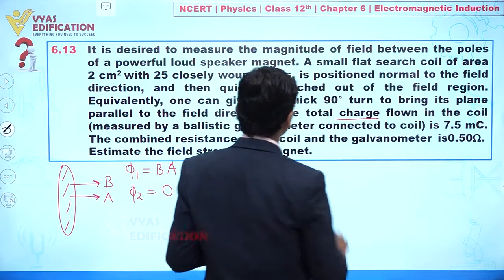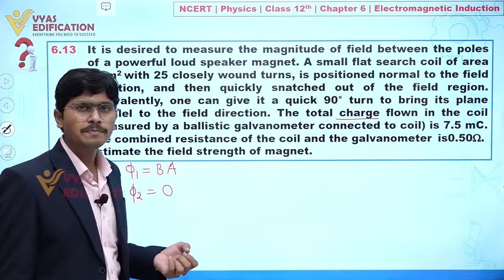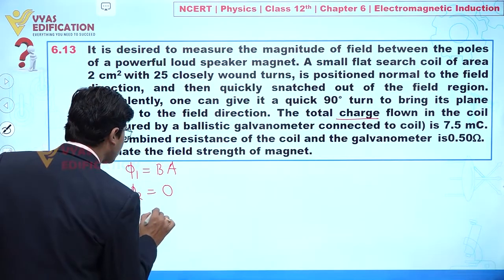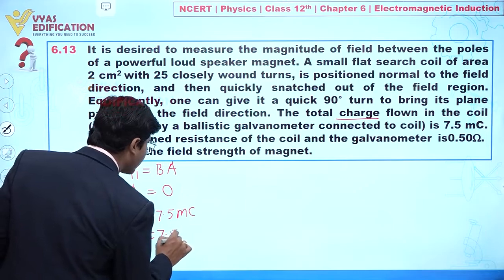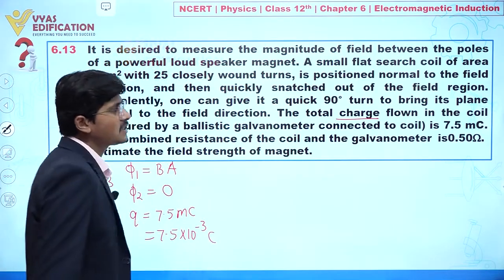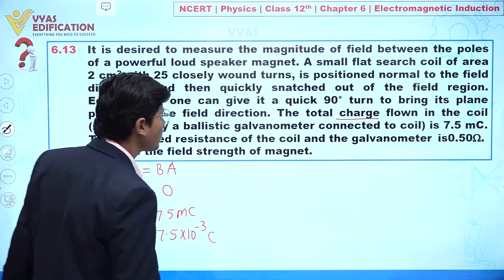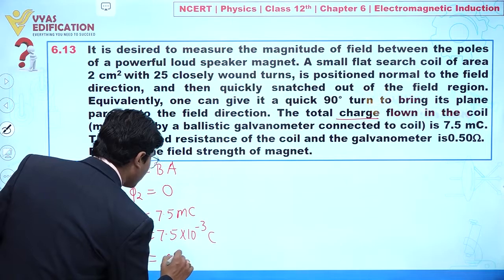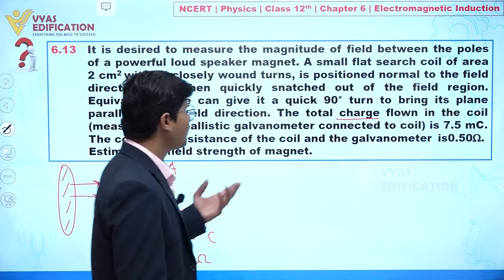One more thing is given: the total charge flown in the coil is 7.5 millicoulomb, so Q = 7.5 × 10⁻³ coulomb. The resistance of the coil and the galvanometer is given as 0.5 ohm. Now we have to estimate the strength of the magnet.